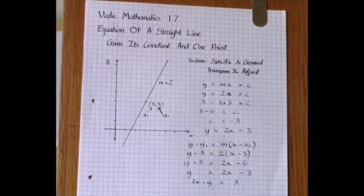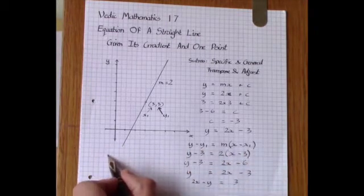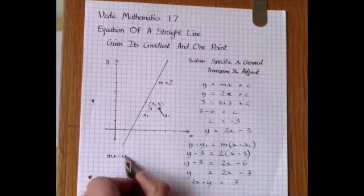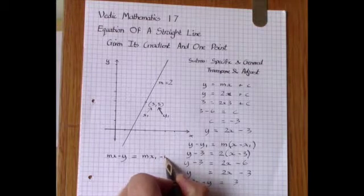So we'll look at the Wadig method now. It uses a rearrangement of this formula as mx minus y is equal to mx1 minus y1.